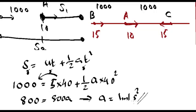So if B has a minimum acceleration of 1 m/s², it can overtake A before C comes to A. But if the acceleration is less than this, then C will win the race.